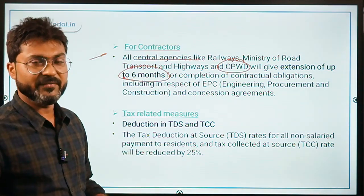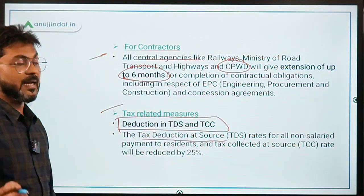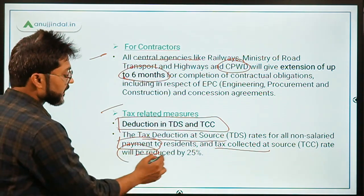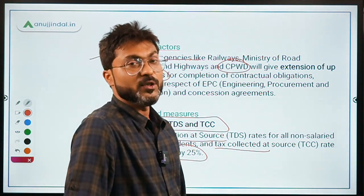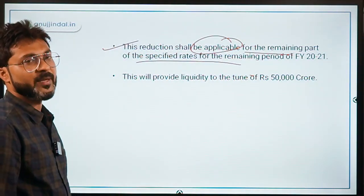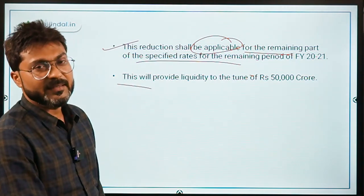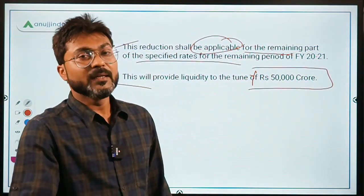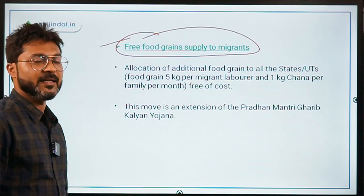TDS and TCS rates for all non-salaried payments to residents were reduced by 25% for the remaining period of financial year 2020-21. The government estimated this would provide liquidity worth ₹50,000 crore in the economy. Free food grain supply to migrants was provided under the Pradhan Mantri Garib Kalyan Anna Yojana.